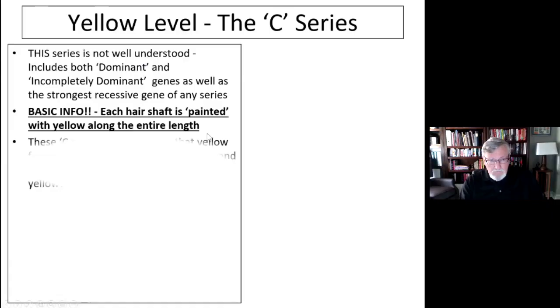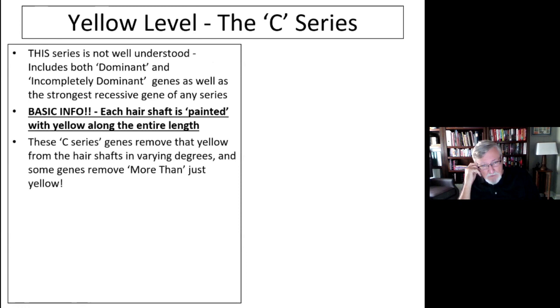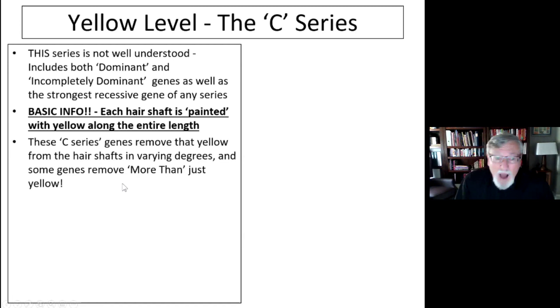The C series is not well understood. I go into immense detail in the advanced genetics presentation, but I want you to not be like most people who don't understand it. It includes dominant genes, incomplete dominant genes, and the strongest recessive gene of any series. Basic information: each hair shaft is painted with yellow along the entire length, and then there's black or chocolate on top of that. The C series may or may not remove yellow from the hair shaft in varying degrees. Some genes in the C series remove more than just yellow.